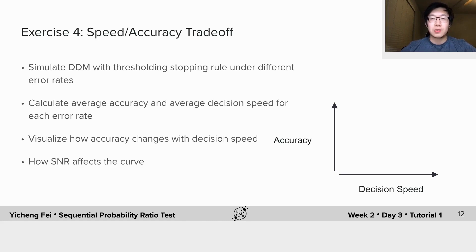After that, use our provided code to visualize the relation between accuracy and speed. And don't forget to use the sliders to explore how the curve changes with signal-to-noise ratio. Have fun!